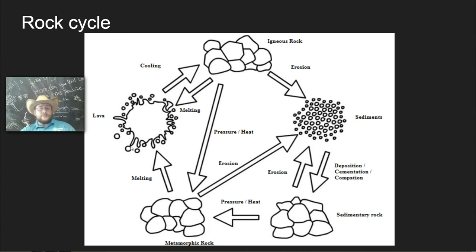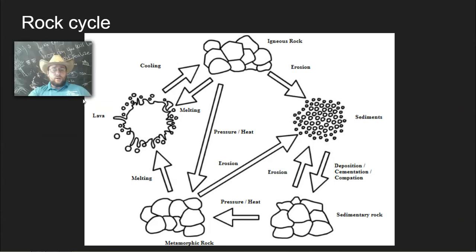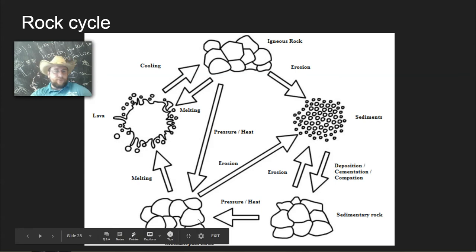We talked about how that applies to the rock cycle, which is the process by which rocks change. We have three main kinds of rocks. You have molten rock that cools down to form what's called an igneous rock or volcanic rock. Then you have rocks that form from sediments being deposited, compacted, and cemented together, which is called sedimentary rock.